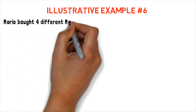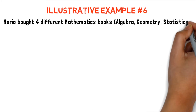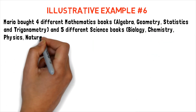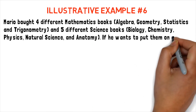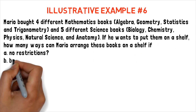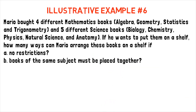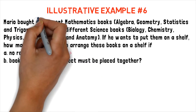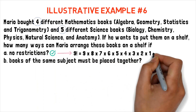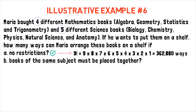Illustrative example number 6: Mario bought 4 different mathematics books — algebra, geometry, statistics, and trigonometry — and 5 different science books — biology, chemistry, physics, natural science, and anatomy. If he wants to put them on a shelf, how many ways can Mario arrange these books if A) there are no restrictions? Since there are no restrictions, Mario can place all 9 books anywhere, so the answer is 9 factorial, which gives us 362,880 ways.